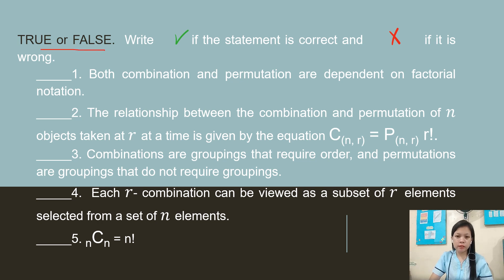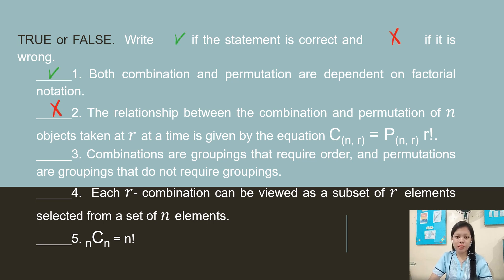True or false — write a check if the statement is correct and X if it is wrong. Number 1: Both combination and permutation are dependent on factorial notation. Answer: check. Number 2: The relationship is C(n, r) = P(n, r) over r factorial. Answer: X. Number 3: Combinations are groupings that require order and permutations do not require order. Answer: wrong. Number 4: Each r combination can be viewed as a subset of r elements selected from a set of n elements. Answer: check.